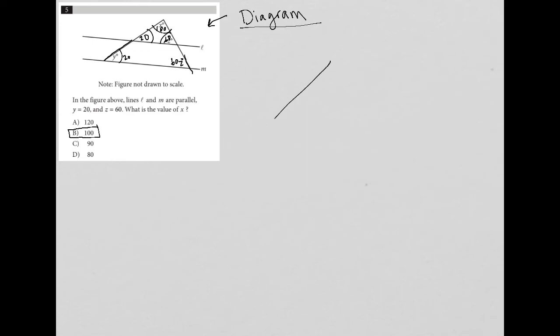Again, because if I were to kind of blow up that top triangle, we are told that this is 60. We can figure out that this is 20 because this angle corresponds to that angle, or those two angles are congruent to each other because they are considered to be corresponding angles.